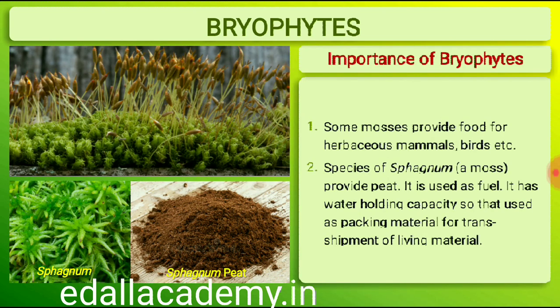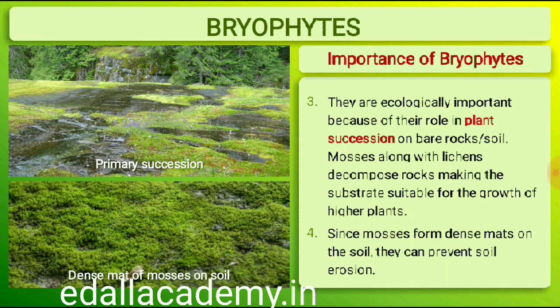Bryophytes in general are of little economic importance, but some mosses provide food for herbaceous mammals, birds and other animals. Species of Sphagnum, a moss, provide peat that has long been used as fuel and as packing material for transshipment of living material because of its capacity to hold water. Mosses along with lichens are the first organisms to colonize rocks and hence are of great ecological importance; they decompose rocks making the substrate suitable for the growth of higher plants. Since mosses form dense mats on the soil, they reduce the impact of falling rain and prevent soil erosion.